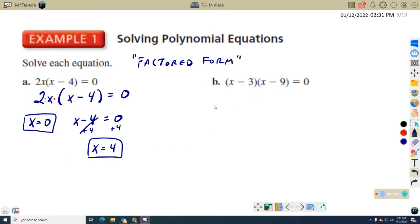X minus three times X minus nine. Well, I'm multiplying X minus three times X minus nine. So X minus three can equal zero. X minus nine can equal zero. So solving the first one for X, adding three to both sides, X equals three. X minus nine equals zero, plus nine. Adding nine to both sides, X equals nine. Two solutions.